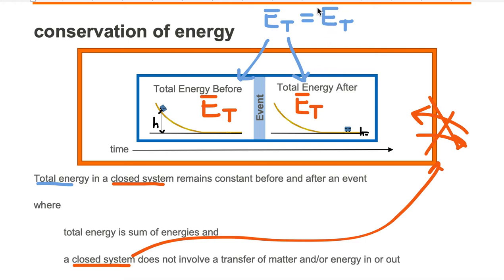The sum of the energies before and after the event must be the same. For example, we have a sled at the top of the hill — it has all potential energy. That is the only energy available before the event occurs, so the sum of all energies is just the potential energy. The object has the potential to move to ground. When we let the sled go, it moves to ground and is actually moving to the right with a speed V.